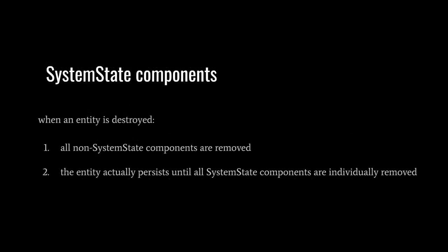System state components are like regular components except for one difference. When an entity with any system state components is destroyed, all non-system state components get removed, but the entity is not actually destroyed. Only once we remove all of the system state components does the entity actually get destroyed. The primary use case is doing cleanup work after destroying entities. If we put data needed for cleanup in system state components, we can find the entity for cleanup by querying for all entities with only those system state components, then perform our cleanup and remove the system state components to actually destroy the entities.